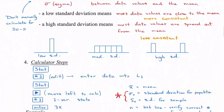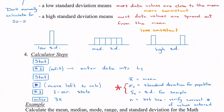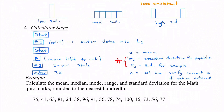To calculate standard deviation we're going to use our calculator. When we get information from the calculator, it'll show us x-bar for mean, sigma-x (σx) for standard deviation of a population, and Sx for standard deviation of a sample — remember, a sample is when you only took a few data pieces. The value n at the end is used to verify the number of values entered; if you had 10 data points but it says 9, you missed entering one.